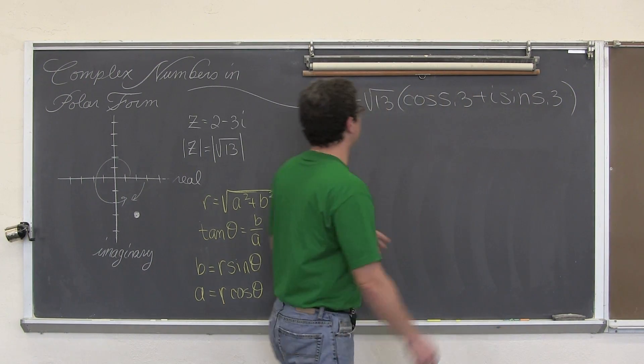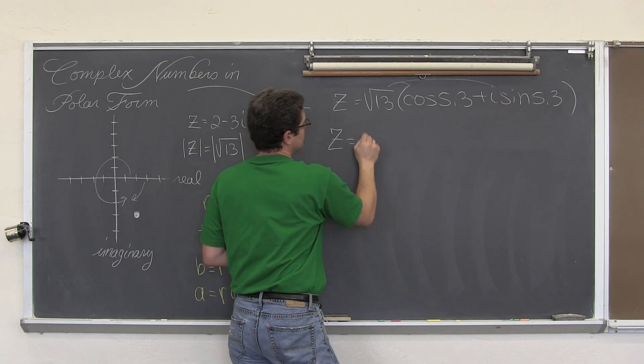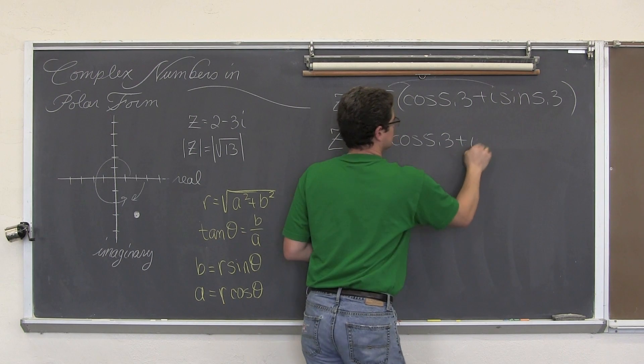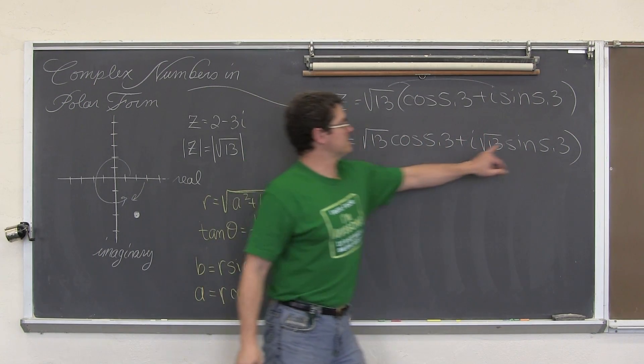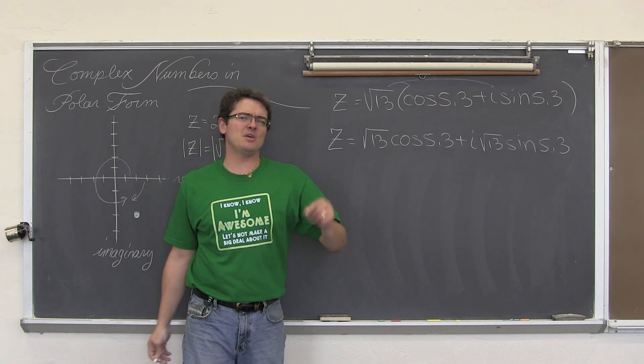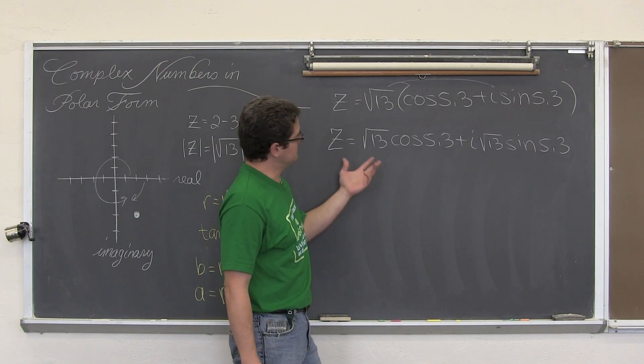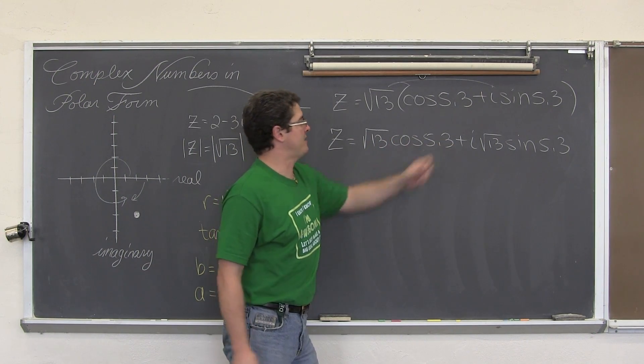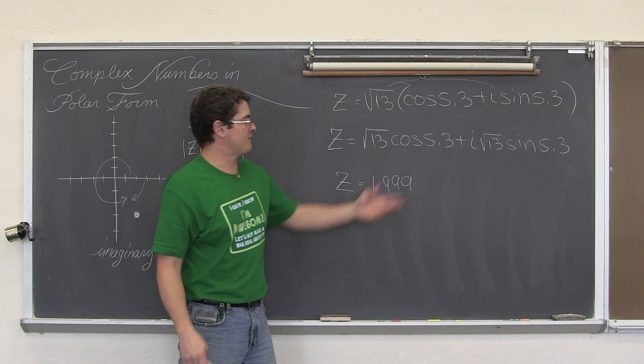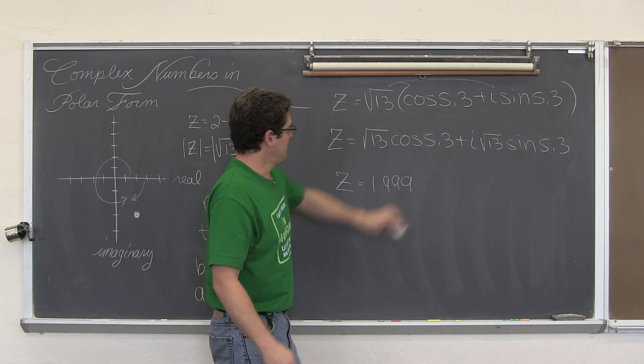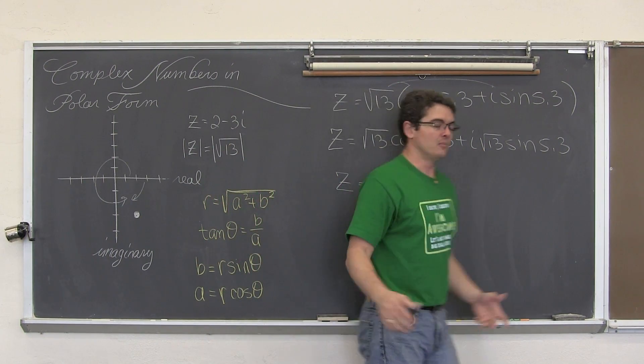If you want to put this back into rectangular form, I would suggest just distributing the r value. Make sure your calculator is in the correct mode. If you are in radians, make sure you are in radian mode. So every time you hit sine, cosine, or tangent, you have to make sure your calculator is in the right mode. So just put this in your calculator. Square root of 13 times the cosine of 5.3 is, as we know, 2. It might come out to be like 1.9999, but it is just round off error. It is going to be basically 2. And then, square root of 13 times the sine of 5.3 is negative 3i. So there you go.